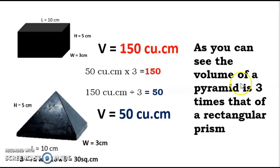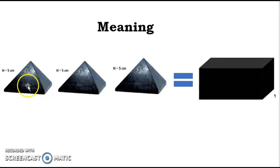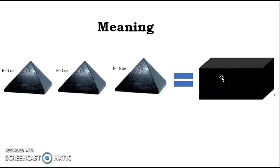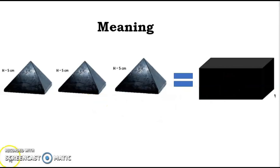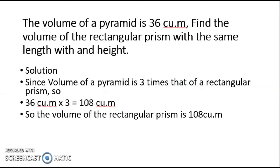So the volume of a rectangular prism is 3 times that of a pyramid with the same dimensions. In other words, 3 pyramids with the same height, length, and width equals 1 rectangular prism.